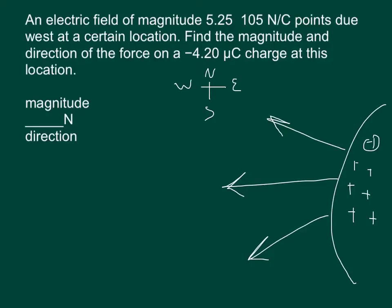An electric field of magnitude 5.25 times 10 to the 5th newtons per coulomb points due west at a certain location. Find the magnitude and direction of the force on a negative 4.2 microcoulomb charge at this location.